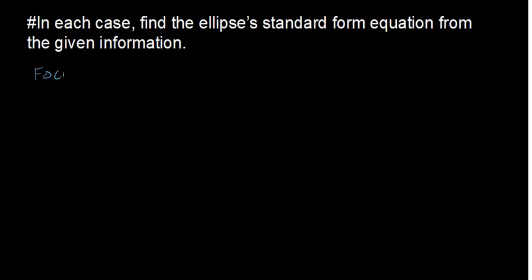The first question gives us the foci as positive or negative square root of 2 comma 0, and we're also given the vertices as positive or negative 2 comma 0. One thing we observe here is that the question doesn't tell us whether it's centered at the origin or at any other point.